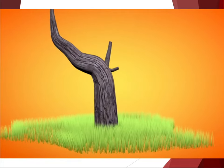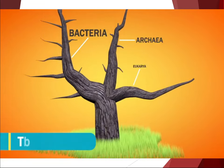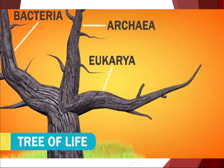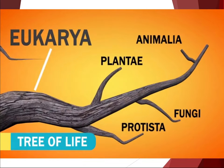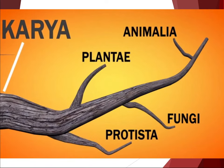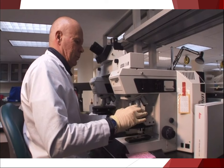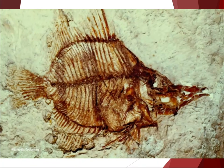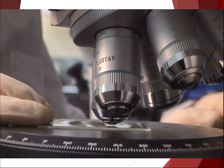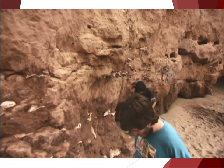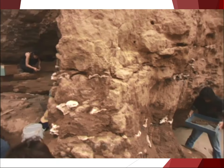Think of life on Earth as part of a big tree — a tree of life. Biological organisms, both living and extinct, are placed around the tree according to their relationships with one another. To understand these relationships, scientists combine fossil and genomic evidence to fill in the evolutionary gaps. But when no genetic material is available, scientists must rely entirely on the fossil record.